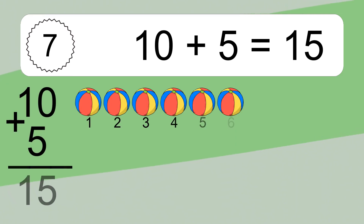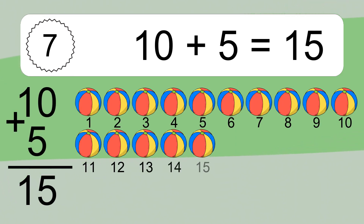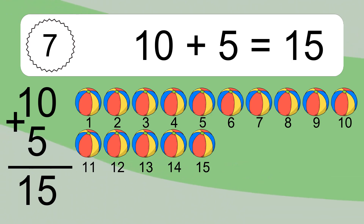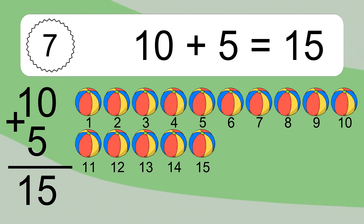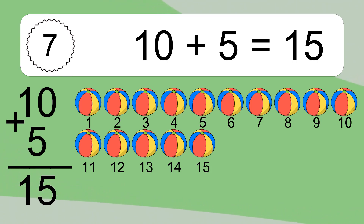10 plus 5 equals what? 10 plus 5 equals 15. Let's count it: 1, 2, 3, 4, 5, 6, 7, 8, 9, 10, 11, 12, 13, 14, 15.